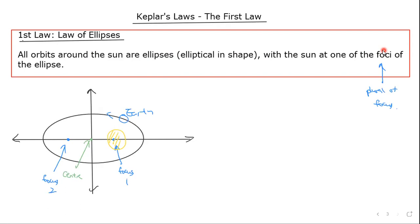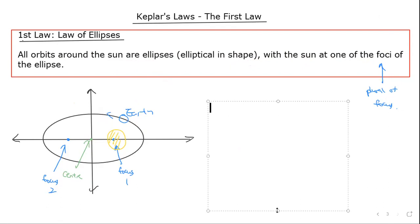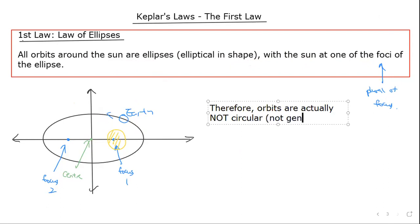In more general terms, all orbits — for example, the moon around the earth or asteroids around the sun — are ellipses, with the central mass at one of the foci, not the center of the ellipse. The most important takeaway from this law is that orbits are not generally circular; they almost never are actually a perfect circle.